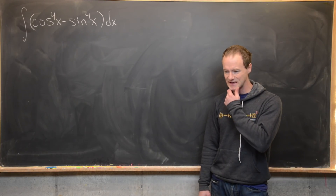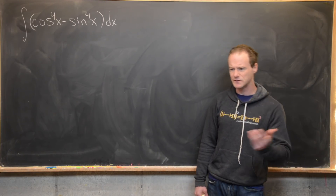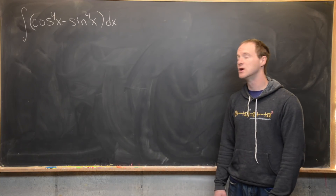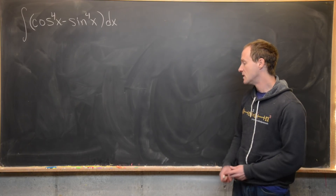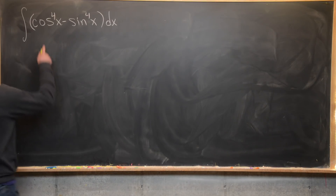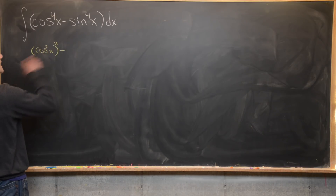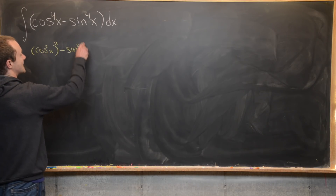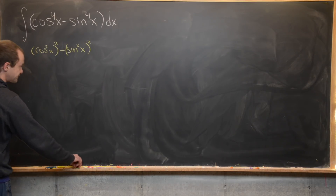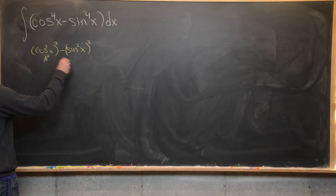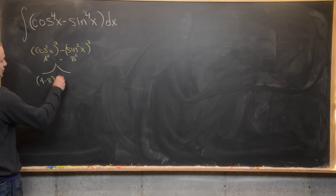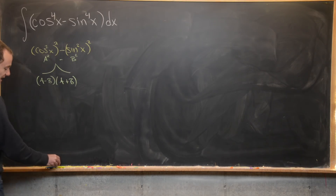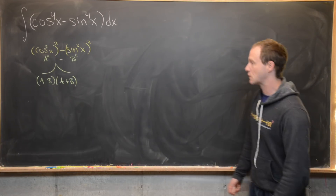If you look at this you might think to use some fourth power identity for cosine and sine, but that would actually be too much work. Instead, we can immediately notice that cosine to the fourth is the same as cosine squared squared, and sine to the fourth is the same as sine squared squared. Thinking of these as a squared and b squared, we have the nice difference of squares factorization: a minus b times a plus b.